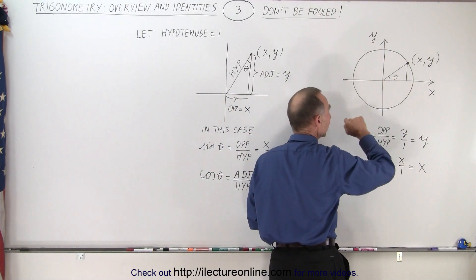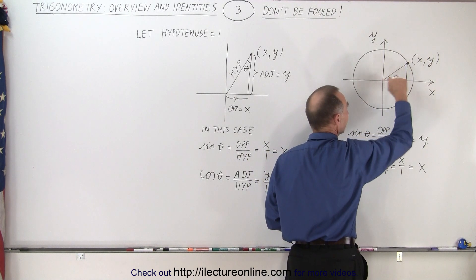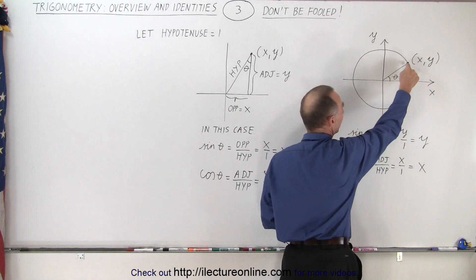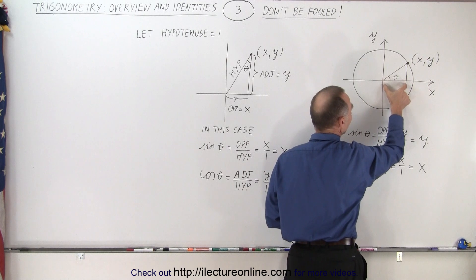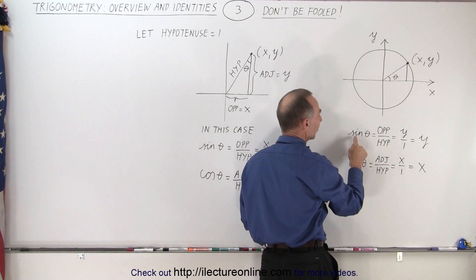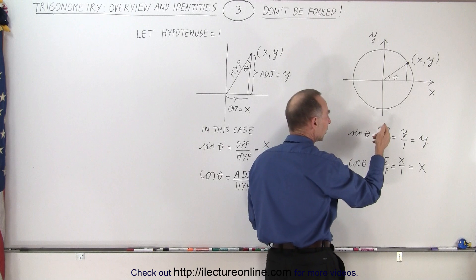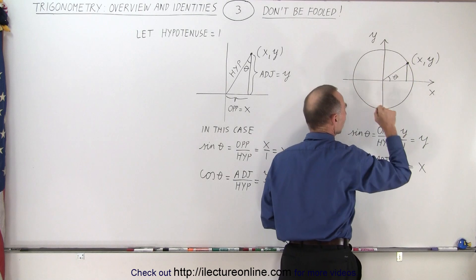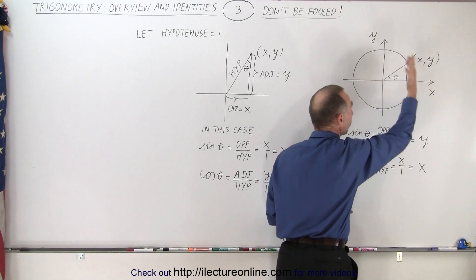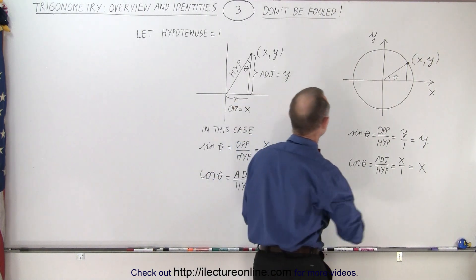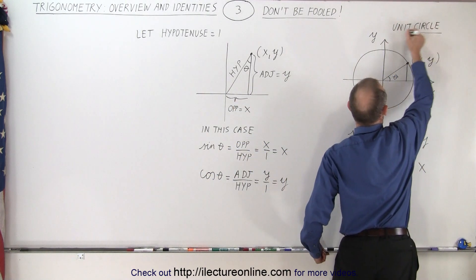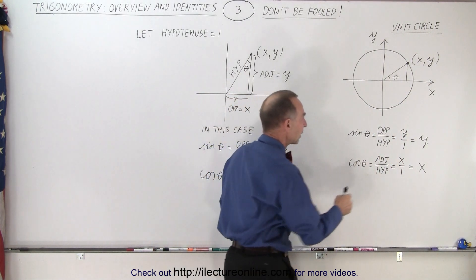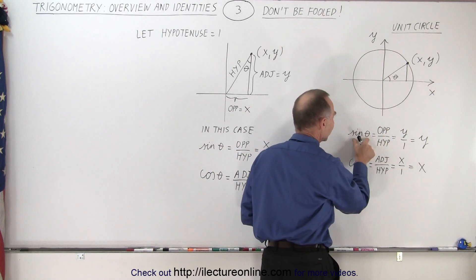Where the angle theta is defined here, we can see that this is the opposite side to the angle, this is the adjacent side to the angle, this is the hypotenuse right here. We pick a point on the circle called x, y — so this is the x value, this is the y value. The sine of theta is defined by the ratio of the opposite side to the hypotenuse. The opposite side is y, and the hypotenuse is equal to 1 because we're dealing with a unit circle. So therefore the sine of theta equals y.